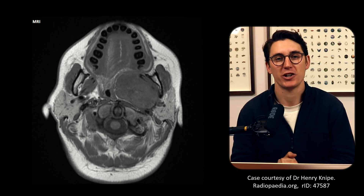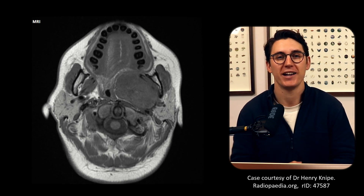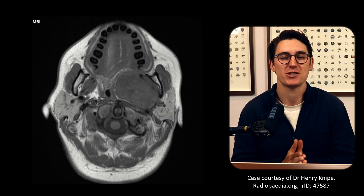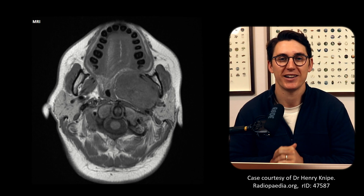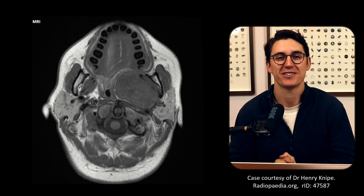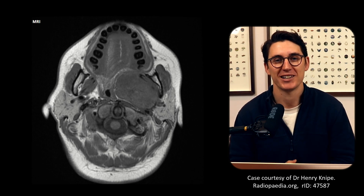So identify the cervical fascial layers — superficial, middle, and deep — see which spaces those are creating, and follow those spaces up through the neck from the infrahyoid into the suprahyoid region. If you take one thing from this talk: look at the parapharyngeal fat, see if it's being displaced, and if so go about identifying where that mass comes from. Thank you so much for joining me. Let me know which topics you'd like me to cover in the comments below, and until the next video, goodbye.